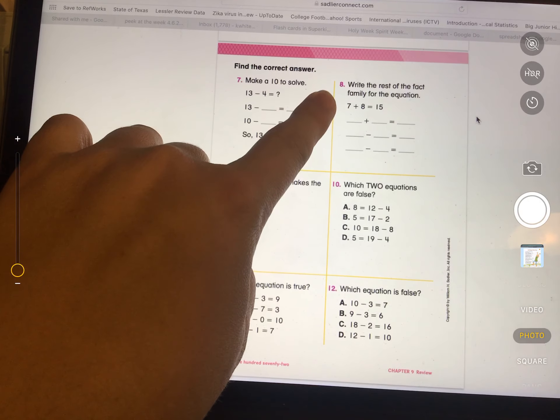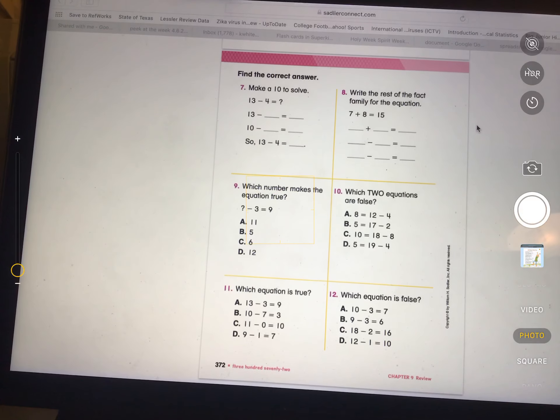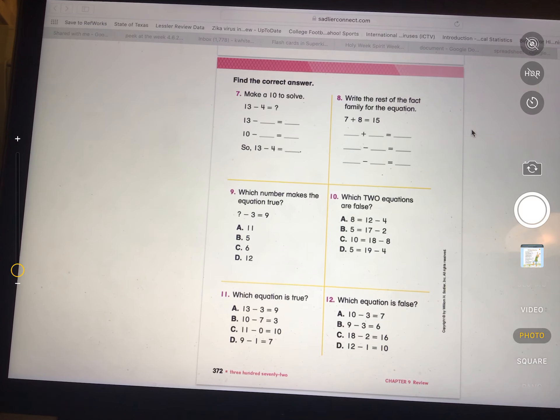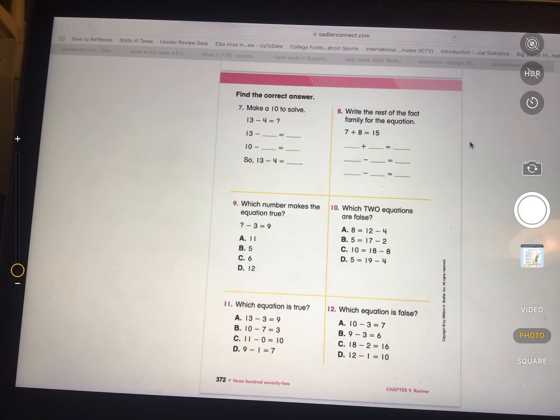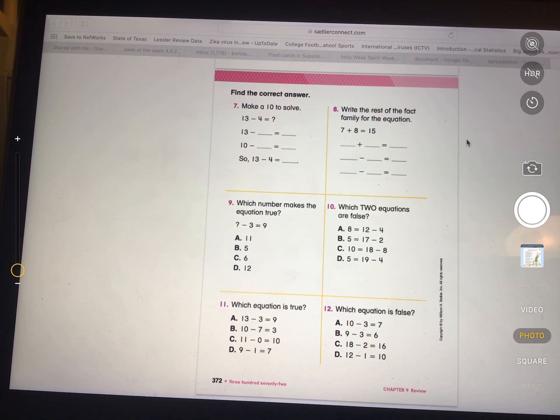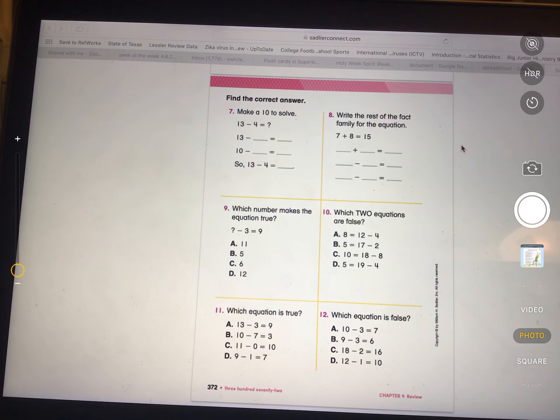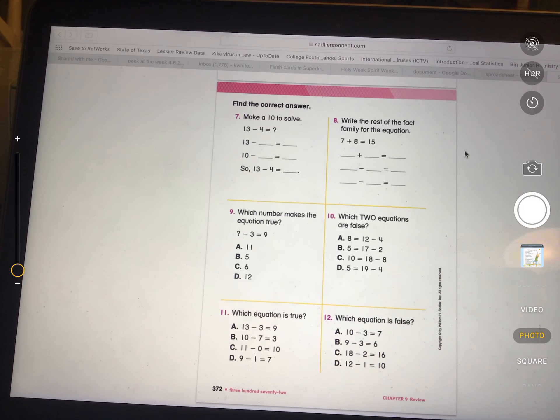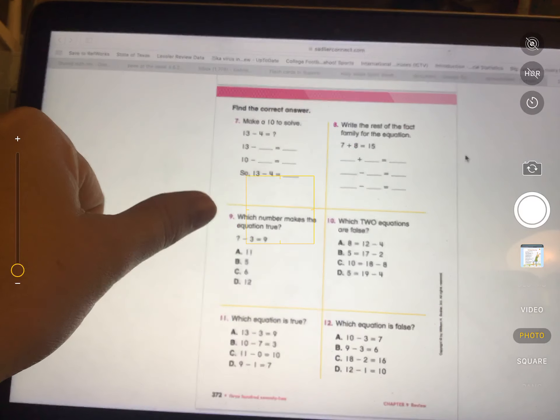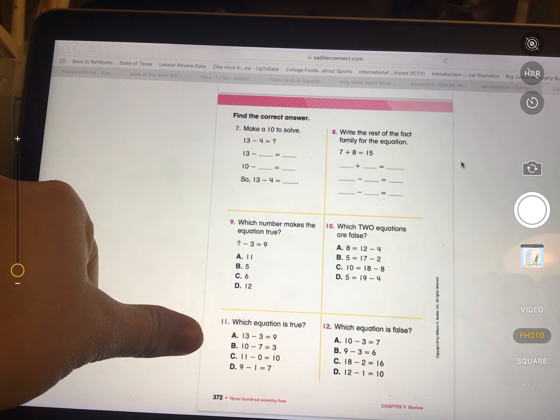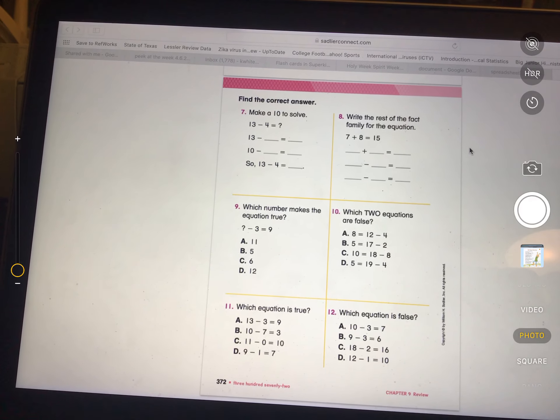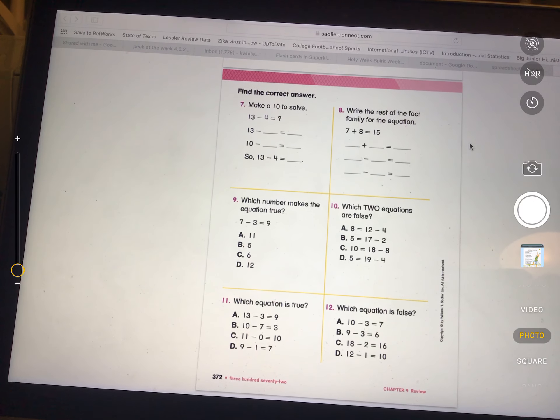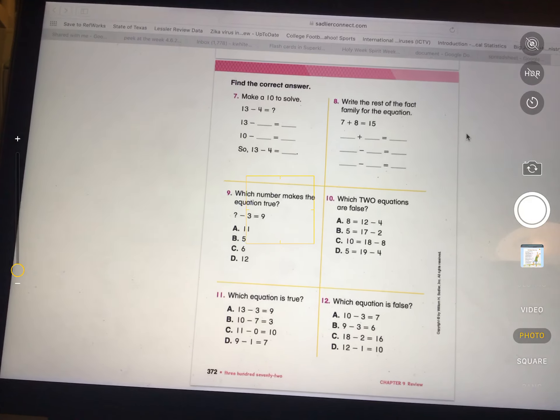On number 8, we've talked about fact families a lot this school year. So everybody should be able to fill that in. Just remember, a fact family, you can only use the same three numbers. So you can only use the 7, the 8, and the 15. But you have to put them in the different orders to show how the fact family fits all together. And then you should do 9, 10, 11, and 12. And just write your answers down. If you can't print and you haven't gotten your book, you can just write the answers down on a blank piece of paper and send a picture.